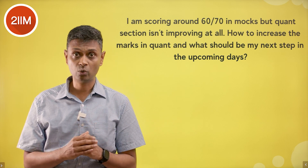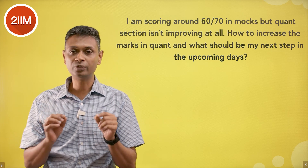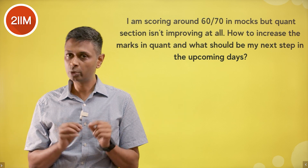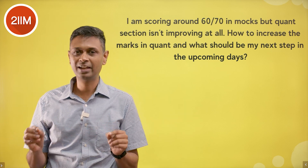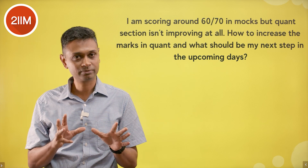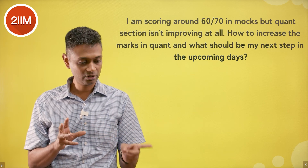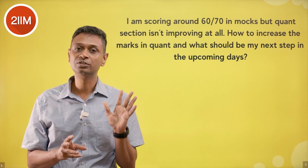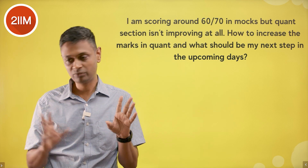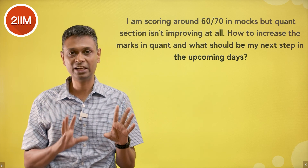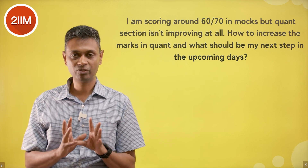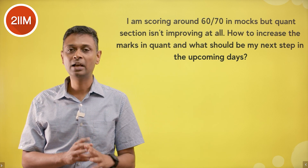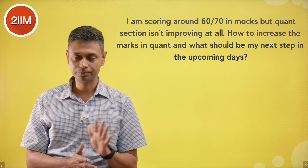As a rule of thumb, if you're at the 12-15 marks level in quant, there are two ways to get to 15 marks. First: attempt 12 questions, get 5 wrong — that's 7 correct at 3 marks each = 21, minus 5 negative marks = 16. Another way to get 15-16 marks: attempt just 5 questions and get everything right.